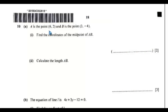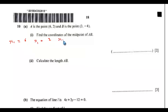Question 10a: A is the point (6, 2) and B is the point (3, -4). Find the coordinate of the midpoint of AB. So you have x1 equals 6, y1 equals 2, x2 equals 3, and y2 equals negative 4.